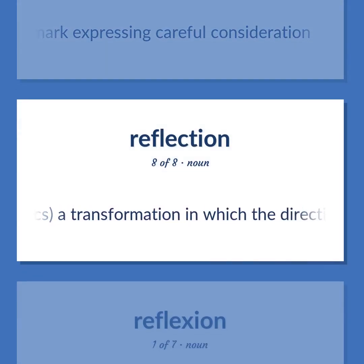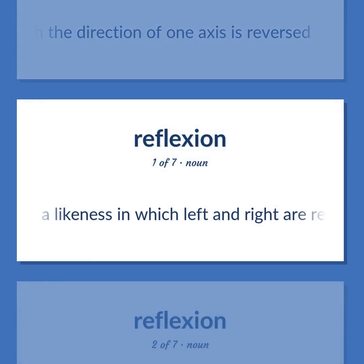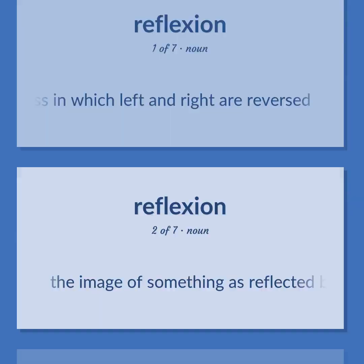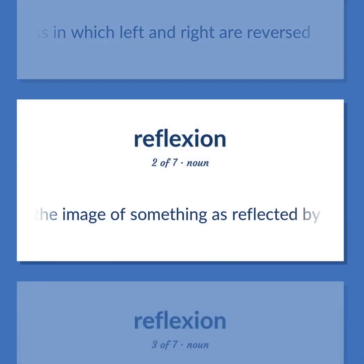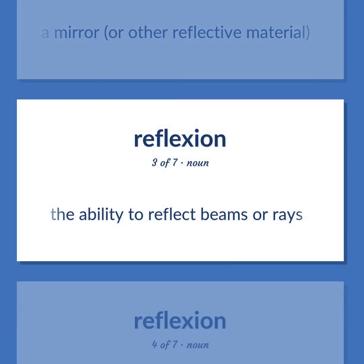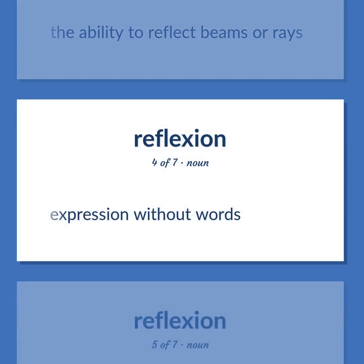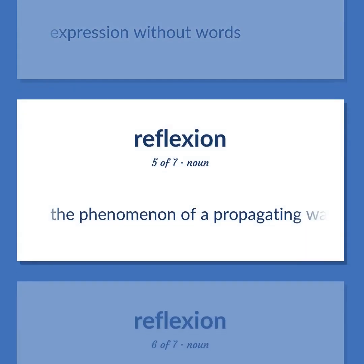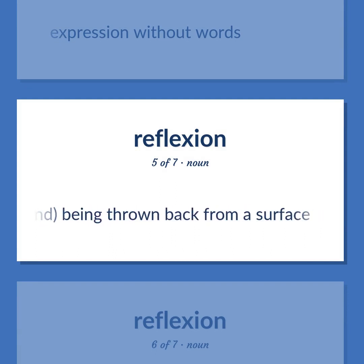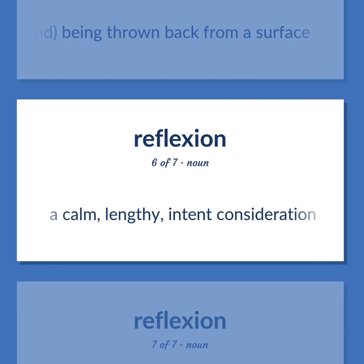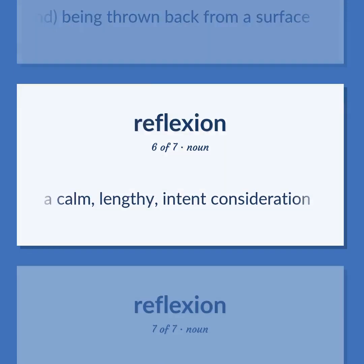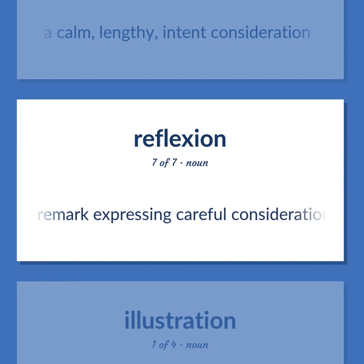Reflection (Mathematics): A transformation in which the direction of one axis is reversed. A lightness in which left and right are reversed. The image of something as reflected by a mirror or other reflective material. The ability to reflect beams or rays. The phenomenon of a propagating wave — light or sound — being thrown back from a surface. A calm, lengthy, intent consideration. A remark expressing careful consideration.